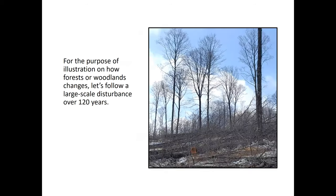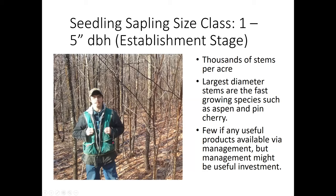Let's look at how forests develop over time following a pattern of disturbance. The first stage is the seedling-sapling size class — one to five inches diameter breast height (DBH) — with thousands of stems per acre. The largest diameter stems are the fastest-growing species like aspen, whether big tooth or quaking aspen, and pin cherry. Beech can also do well. There are typically few if any products coming out of this stage immediately just because they're so small.